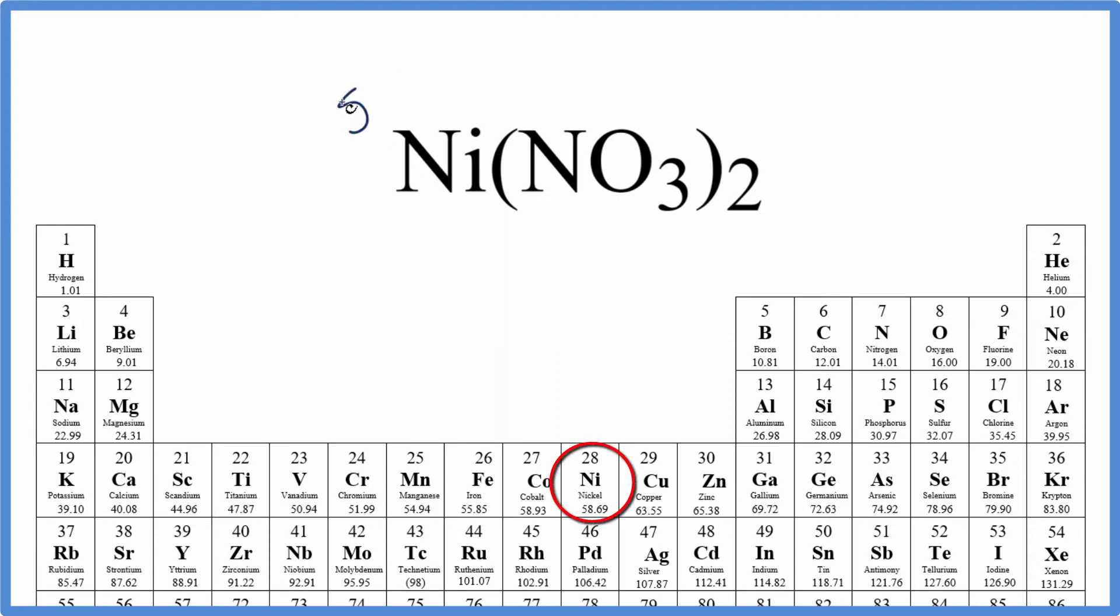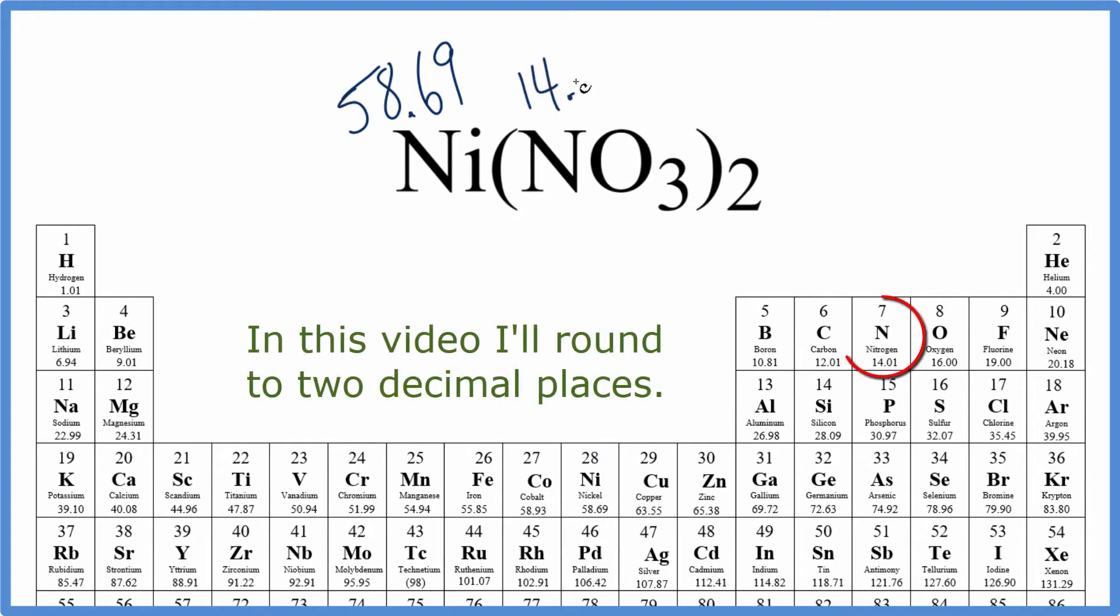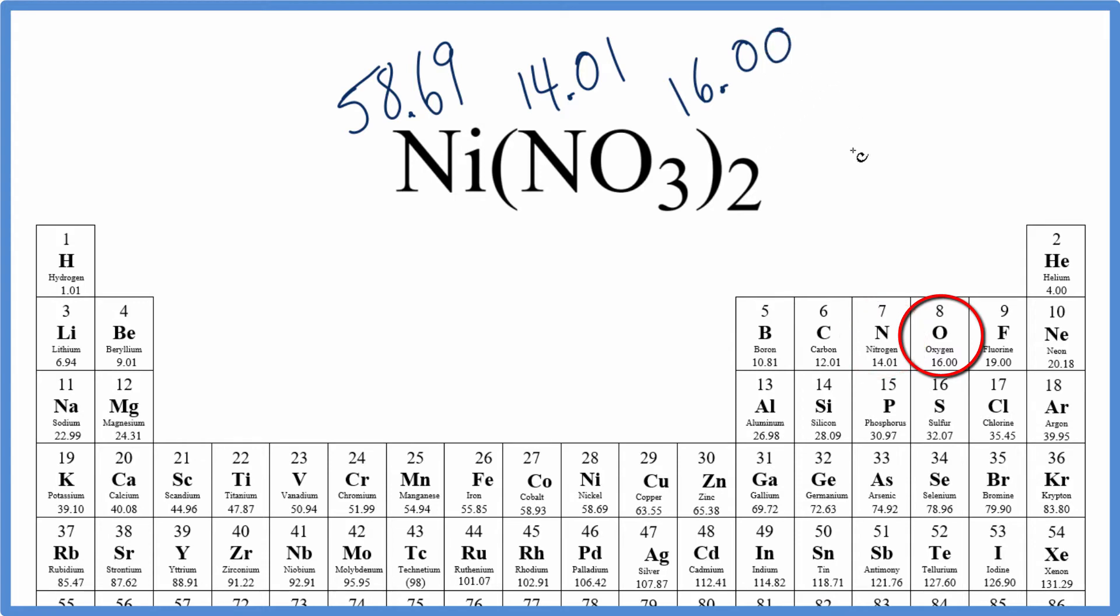Nickel is 58.69 grams per mole, nitrogen is 14.01, and oxygen is 16.00 grams per mole.